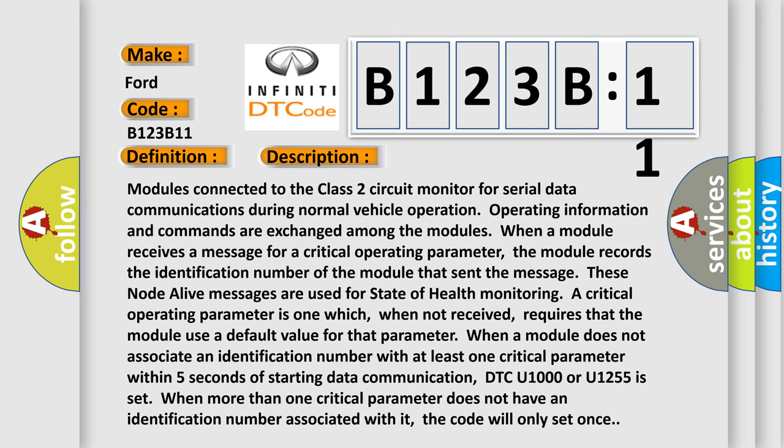These node alive messages are used for state of health monitoring. A critical operating parameter is one which, when not received, requires that the module use a default value for that parameter. When a module does not associate an identification number with at least one critical parameter within five seconds of starting data communication, DTC U1000 or U1255 is set. When more than one critical parameter does not have an identification number associated with it, the code will only set once.